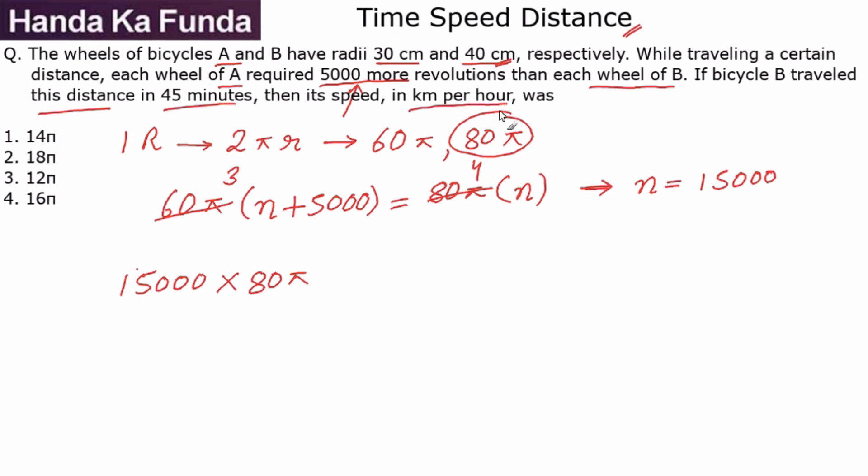If we follow up with the question, it says if bicycle B traveled this distance, which we have calculated, in 45 minutes, then its speed in kilometers per hour is how much. We have calculated the distance in centimeters. Our first job is to convert it to kilometers.